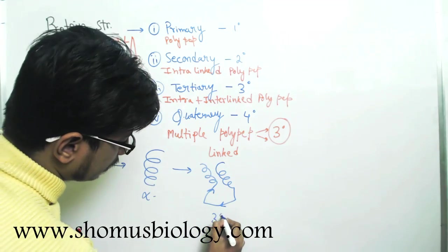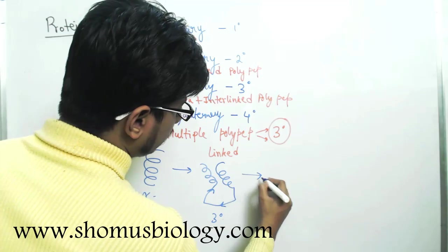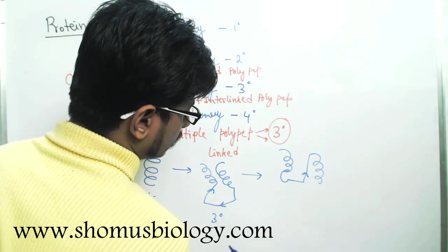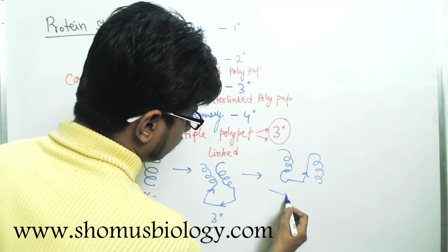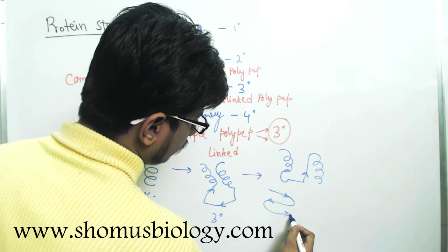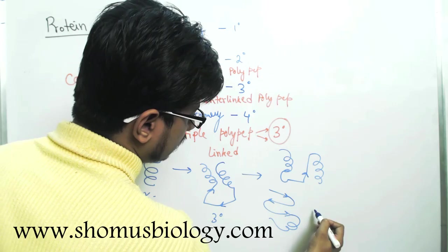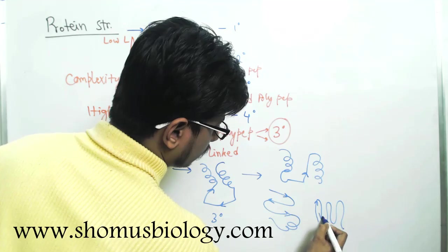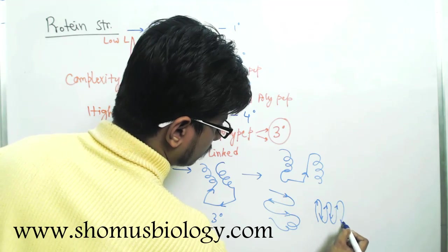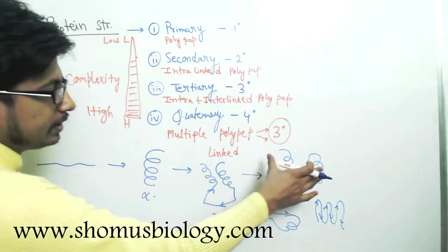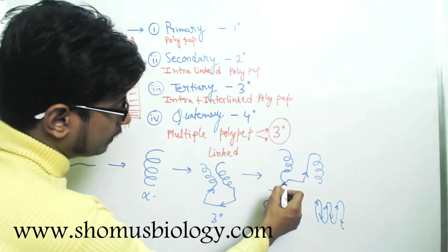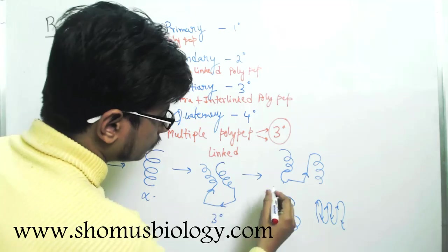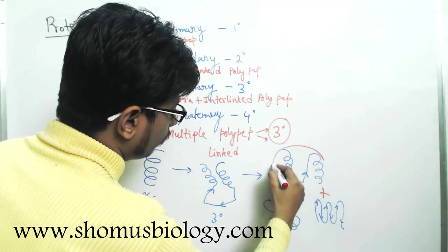Then we have more alpha helix and some of the beta turns and some other of the helix. This is the tertiary structure. And finally we have, let's say, one of such tertiary structure and the other one something like this and the other one like this, all of this with of course beta turns, beta sheets.